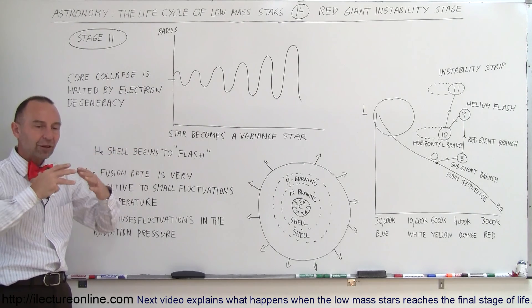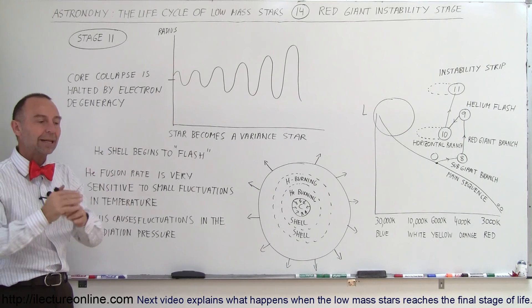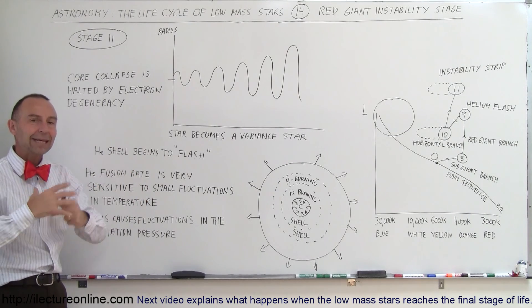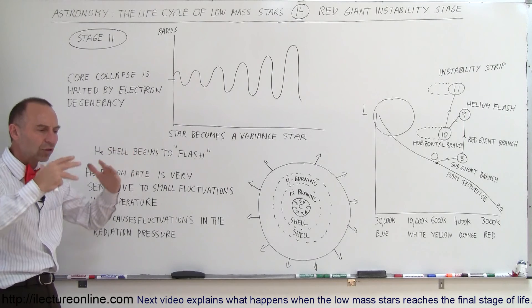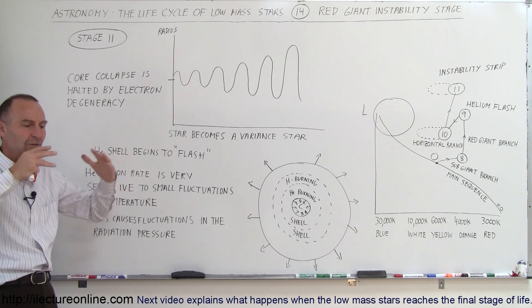The star begins to fluctuate in the amount of heat generated and the amount of radiation pressure generated by that fusion process, which is constantly increasing and decreasing.